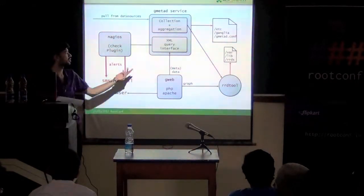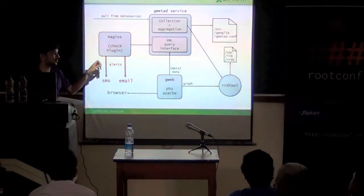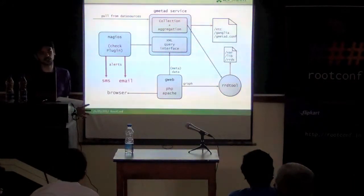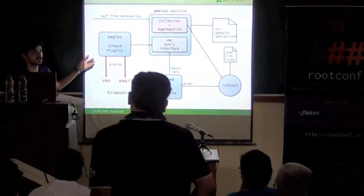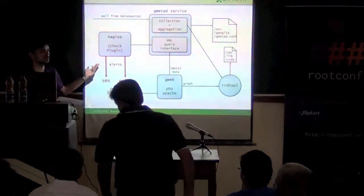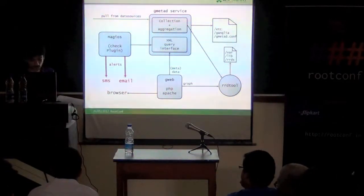It gets its metadata from the query interface and gets graphs directly from RRD tools. The graphs that we saw were just the direct RRD tool and serves the result to the browser. One other thing we have over this data is we can connect Nagios code.